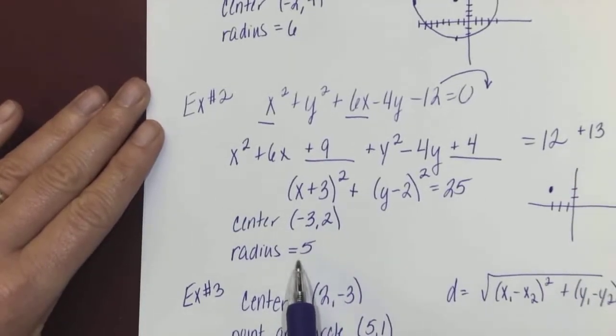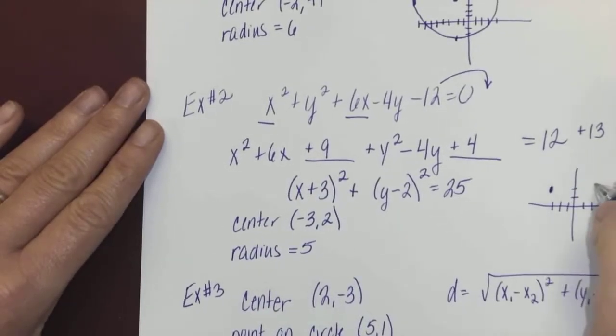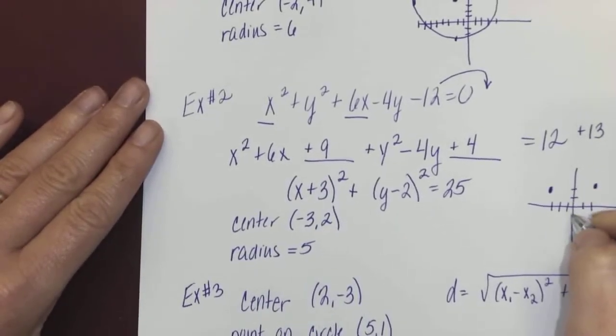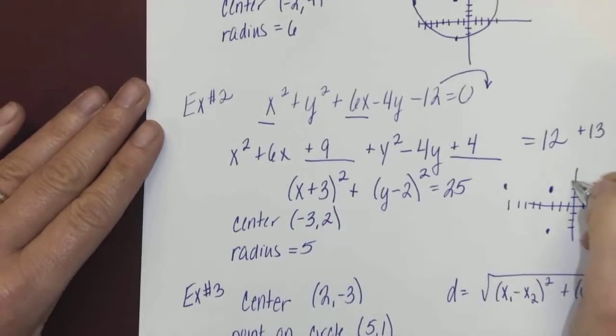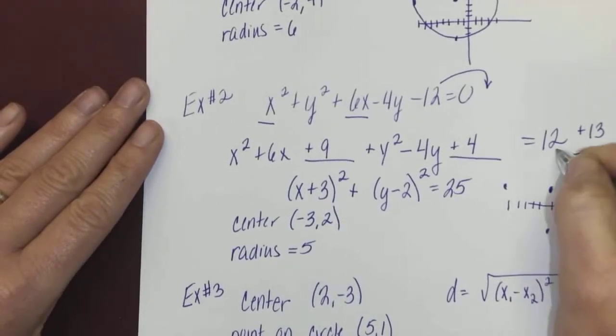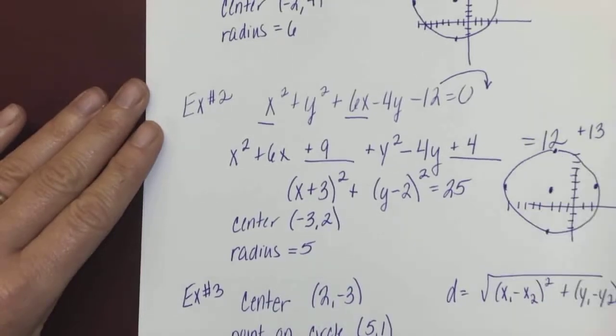If my radius is 5, I will go 5 in each of the 4 directions from that point. So if I go 5 right, I'll be here. 1-2-3-4-5. If I go 5 down, I'll be here. 5 to the left and 5 up, 1-2-3-4-5. And I will roughly sketch in my circle.